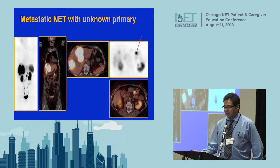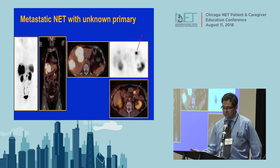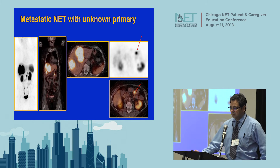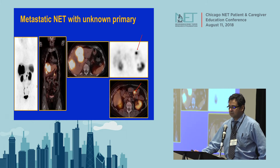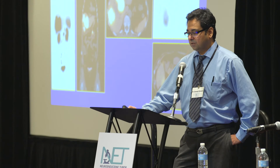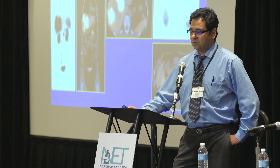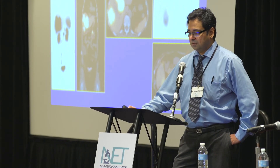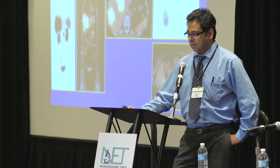Another case of unknown primary tumor: prior CT and MR were negative except for large metastatic lesions. The DOTATATE scan clearly showed a focal uptake in the patient's small bowel. This patient received resection of the small bowel tumor followed by Y-90 therapies for the liver metastasis.